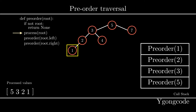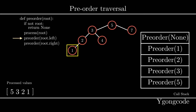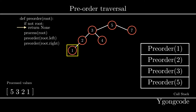At pre-order 1, we process the value 1 and then make a recursive call to its left subtree, which will be pre-order of none. We push this into the call stack. Now we enter pre-order none, which will hit our base case and return. So we remove this call from our call stack and return to our previous call, which was pre-order 1, since it's on top of our call stack.